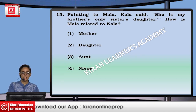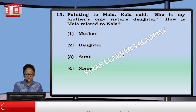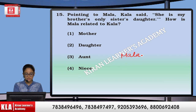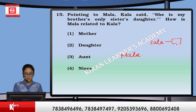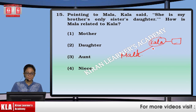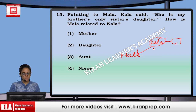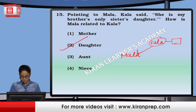Next: pointing to Mala, Kala said she is my brother's only sister's daughter. So Mala is related to Kala — Mala is the daughter of Kala. That means option number second.